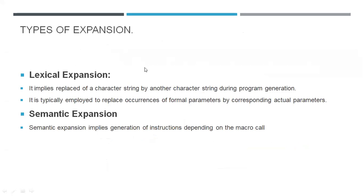After expansion, there are two types of expansion. The first type is lexical expansion and the second is semantic expansion. Lexical expansion means simply replacing the formal parameters with actual parameters. Semantic expansion means the generation of instructions depending on the macro call.